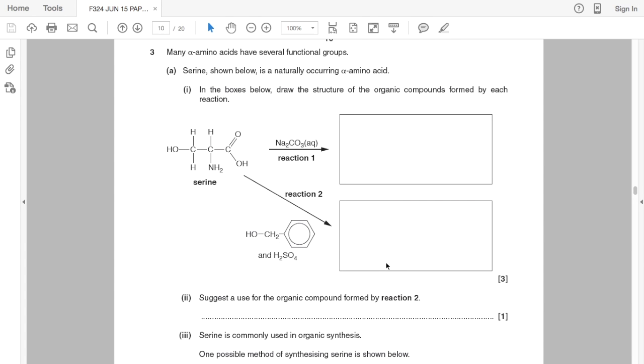I've got a question here that tests your knowledge of the reactions of amino acids. So it starts by telling you about the amino acid serine and you have to draw the organic product for the reaction of serine with sodium carbonate solution and then reaction 2 with this alcohol in the presence of sulfuric acid.